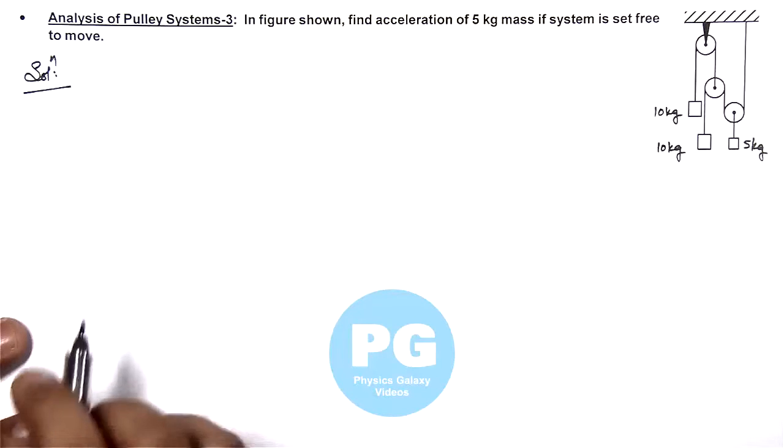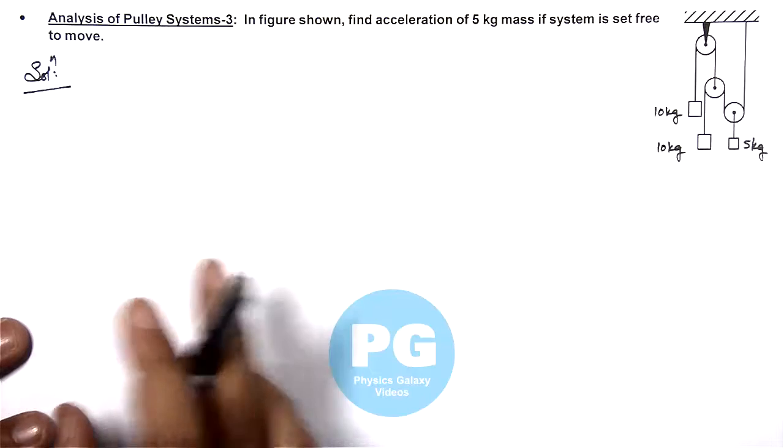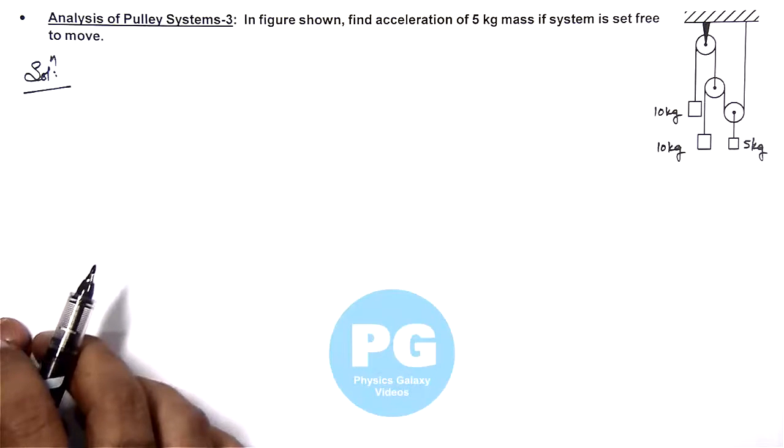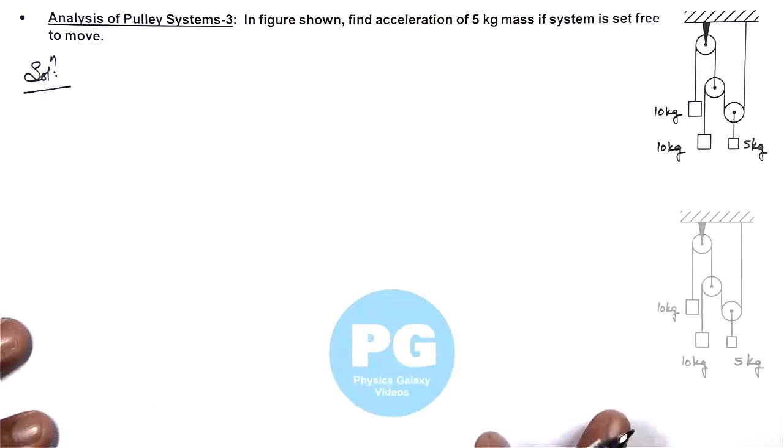And in solution the very first thing we need is to deduce the constraint relation of motion in the 3 blocks. Now if you have a look on this figure, here I will first distribute the tension.